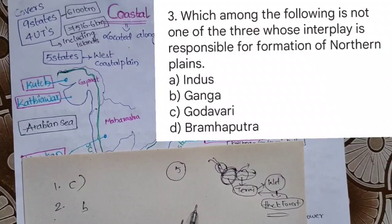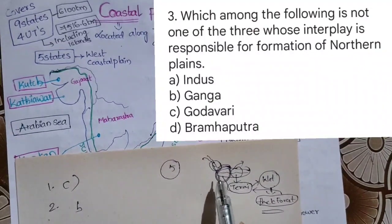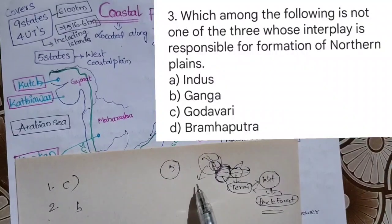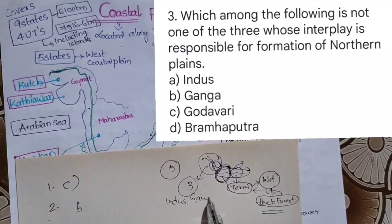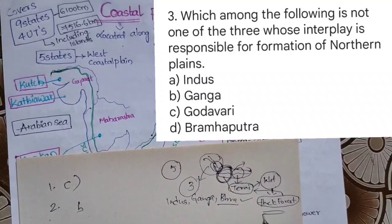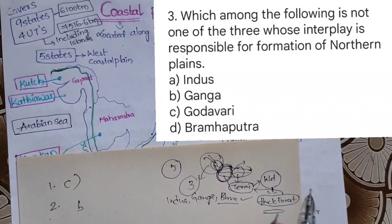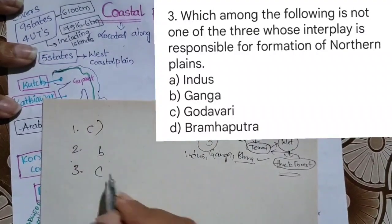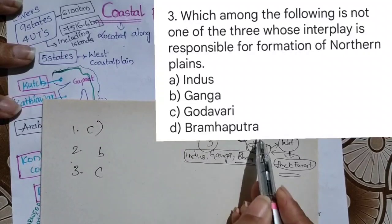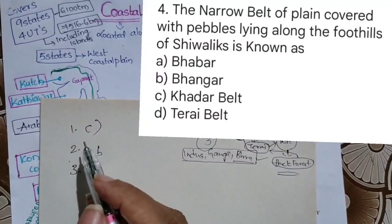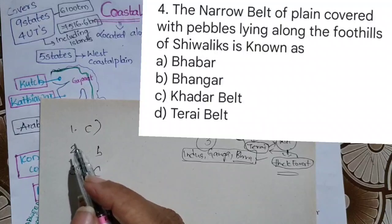Next question: which among the following is NOT one of the three rivers whose interplay is responsible for the formation of the northern plains? The plains are mainly formed by three rivers: Indus, Ganga, and Brahmaputra. So the answer is C: Godavari — because the northern plains are formed by those three rivers, not Godavari.